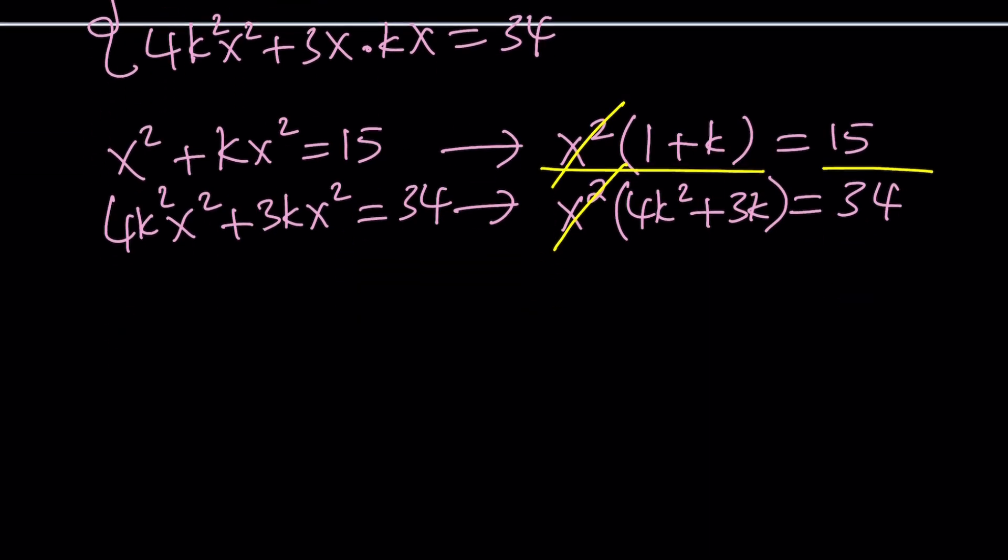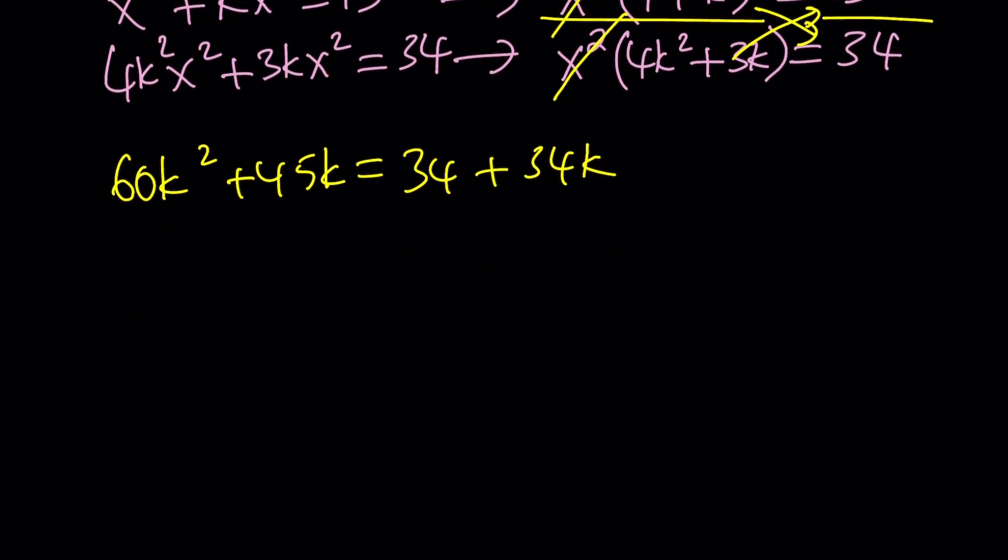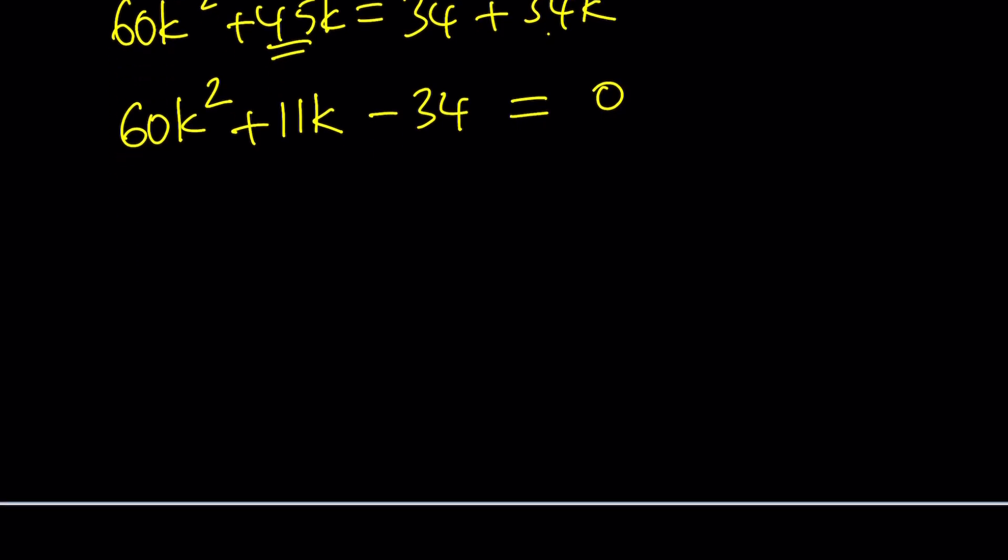Let's simplify those. Notice that we ended up with a single equation in k. Let's cross multiply. 60k² + 45k equals 34 + 34k. It doesn't matter which one you do first, but I wanted to keep the quadratic term on the left-hand side. Let's bring this in: 60k² + 11k - 34 = 0. Wouldn't it be nice if I could simplify this? At least divide by something to make the number smaller, but that's not possible. That's okay.